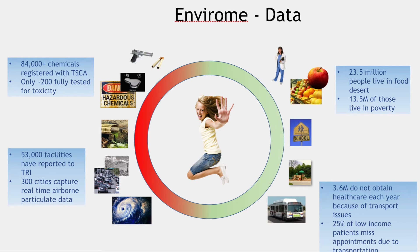Toxic chemicals: there are 84,000 unique chemicals registered with the EPA. We have only known toxicity information about 200 of those, because reporting is only voluntary by the chemical industry. But we do know what companies are making those products and where they are — and that's information that can be available for the envirome.